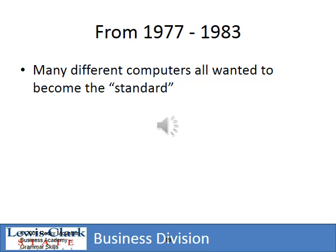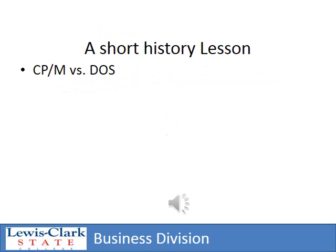By the summer of 1983, everybody and their brother had a computer they thought was better than sliced bread and wanted it to become the standard — kind of like VHS and Beta, or Blu-ray and HD DVD. Eventually one emerges as the standard, and what we really had as a standard was the IBM PC. Many of the other computer manufacturers started to go bankrupt. When IBM got ready to introduce their PC, they decided they did not want to use the operating system becoming the standard, CPM. They wanted their own operating system.